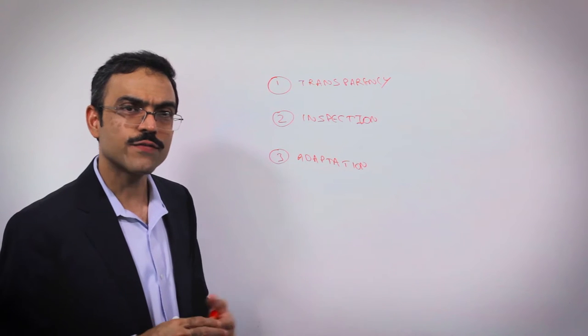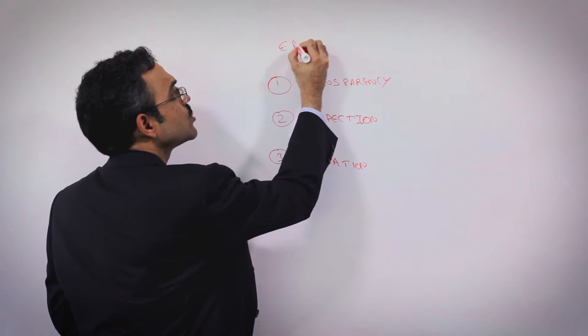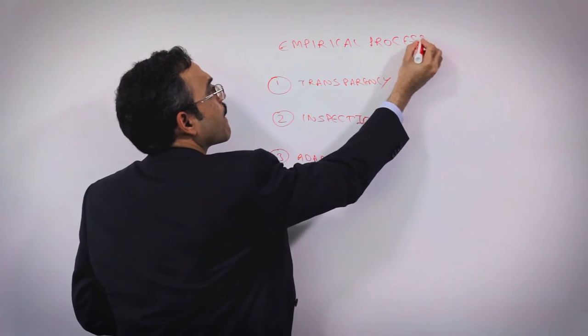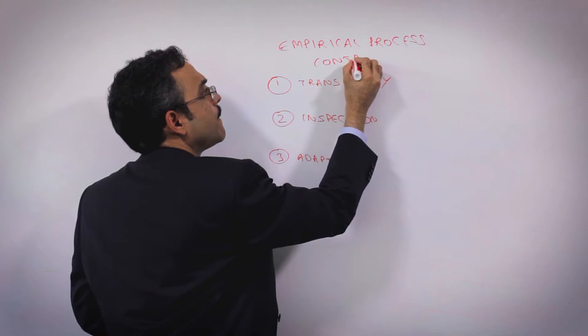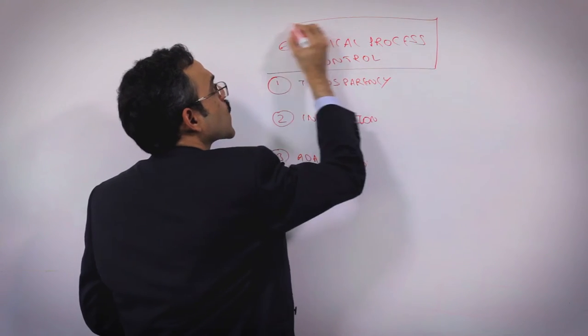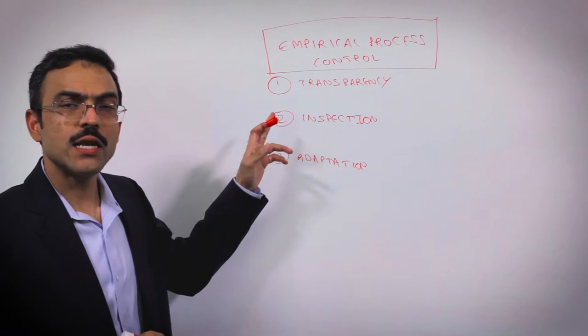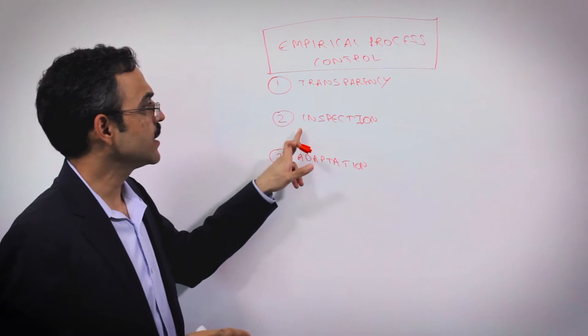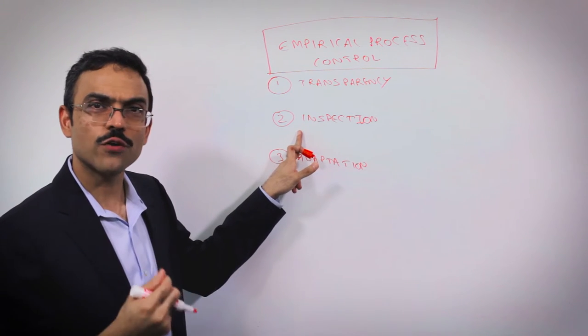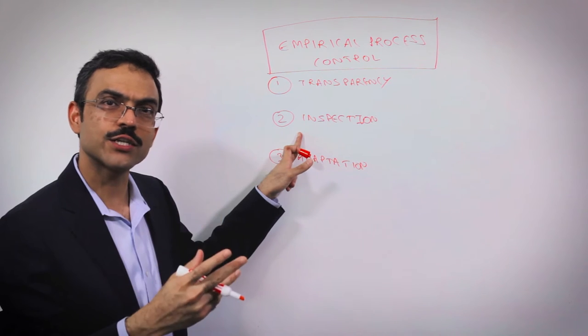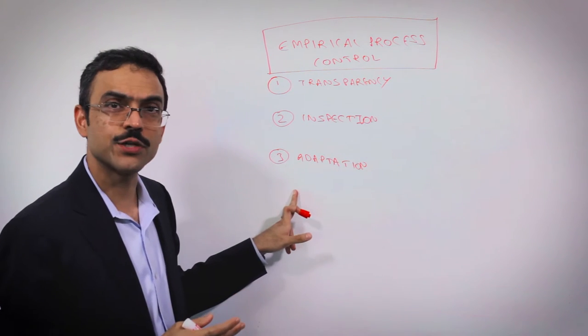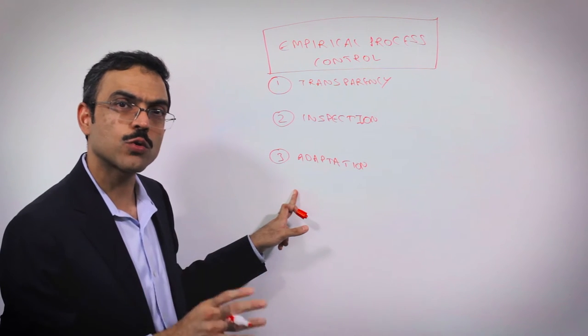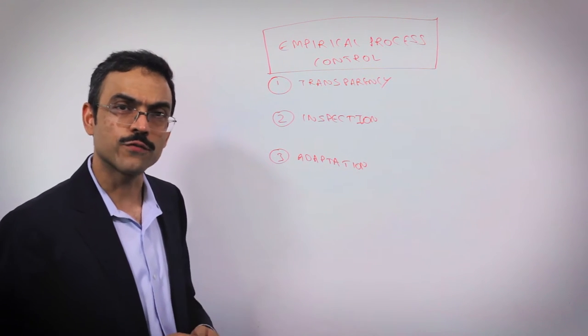In the world of agile software delivery, this kind of approach is known as empirical process control. And the three pillars of empiricism are transparency—being able to see how the software is developing; inspection—testing the software to ask yourself the question, is it going in the direction we want it to; and adaptation—the moment we realize the software is going off track, we make immediate course correction before it goes to the point of no return.